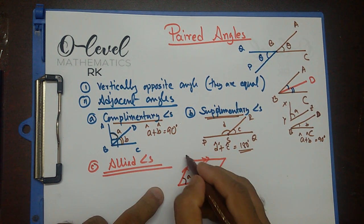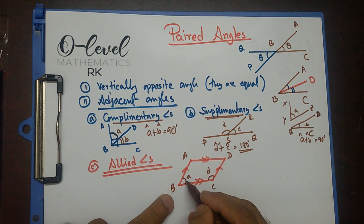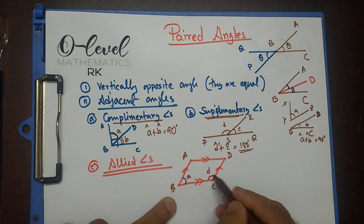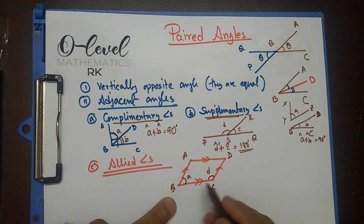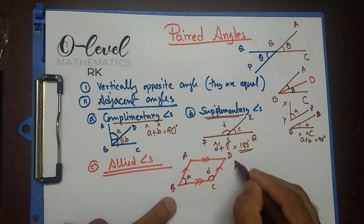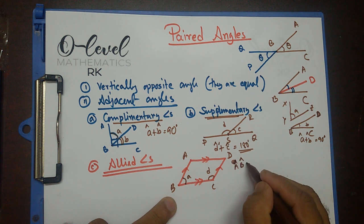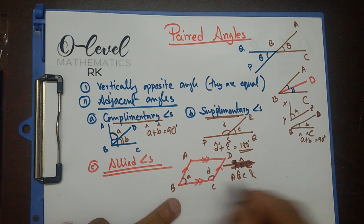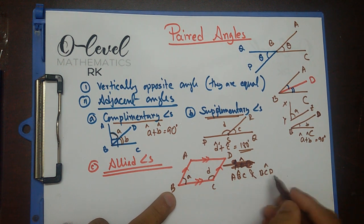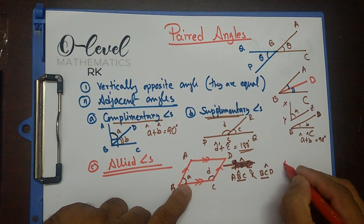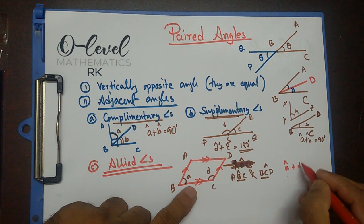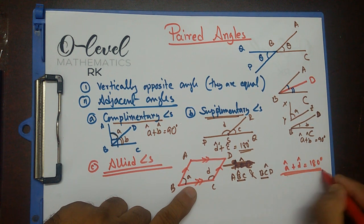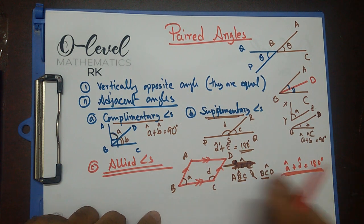If I name the vertices A, B, C, D, then angle ABC and angle BCD have a common side BC. This angle A plus angle D equals 180 degrees, and they are inside the parallel lines. We call them allied angles.